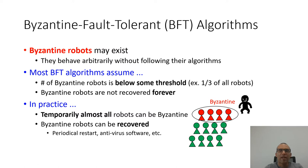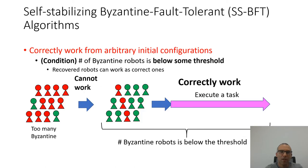In particular, the number of such Byzantine robots may exceed, at least temporarily, any given threshold up to a situation when all robots become faulty. Most algorithms today are based on the assumption that the number of Byzantine robots is less than a third of all the robots. And obviously, when all robots are Byzantine, no meaningful tasks can be achieved. But we would still like the robots to execute their tasks once enough of them have been corrected.